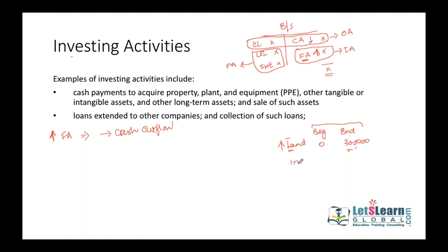Conversely, if investments were 500,000 at the start and are zero at year-end, we sold the investments — so a decrease in fixed assets including investments is a cash inflow. Simply look at the change in fixed assets and investments on the balance sheet to determine whether there is a cash inflow or outflow.